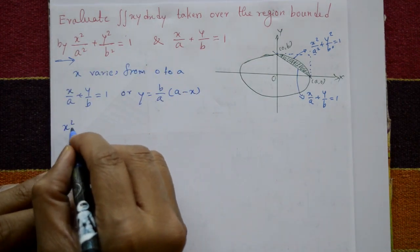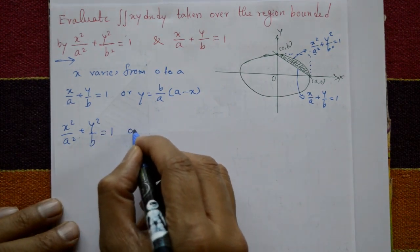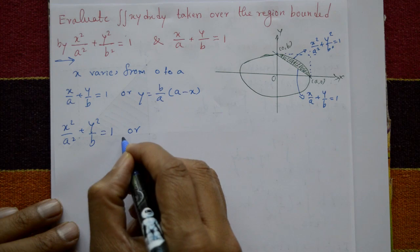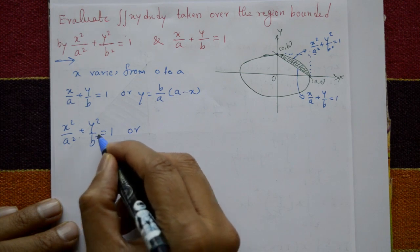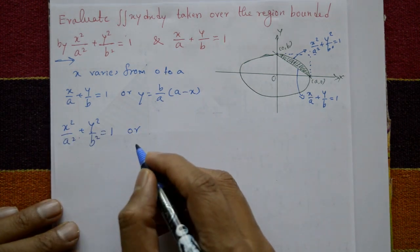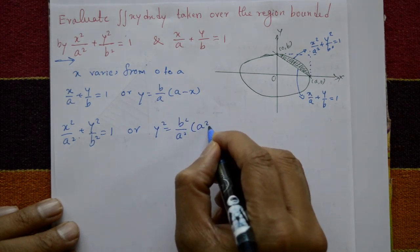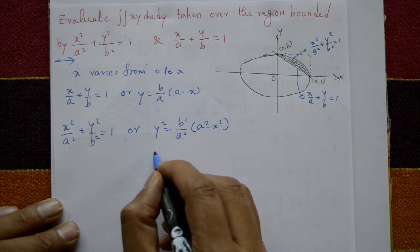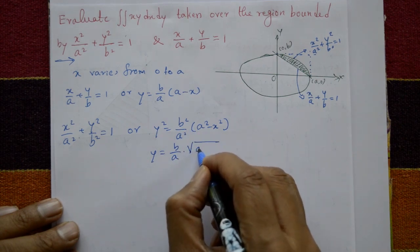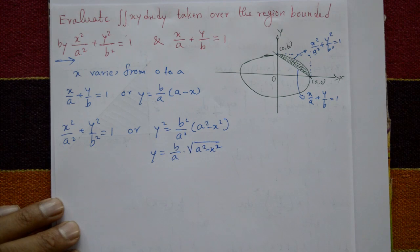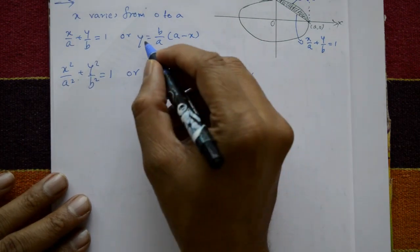For the second equation, the ellipse x²/a² + y²/b² = 1, solving for y: shift x²/a² to the right-hand side, cross-multiply by b², giving y² = b²/a² · (a² − x²), so y = (b/a)√(a² − x²). This is the upper curve.